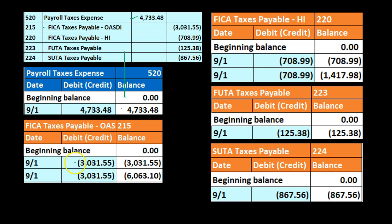Note that those two OASDI figures represent the employee portion and the employer portion — we're focusing here on the employer journal entry. Then we have HI at 708.99: Medicare was at 708.99, we increased it by 708.99 in the credit direction to 1,417.98, again representing employee and employer portions. Then FUTA goes from zero up in the credit direction by 125.38 to 125.38, and SUTA goes from zero up in the credit direction by 867.56 to 867.56.